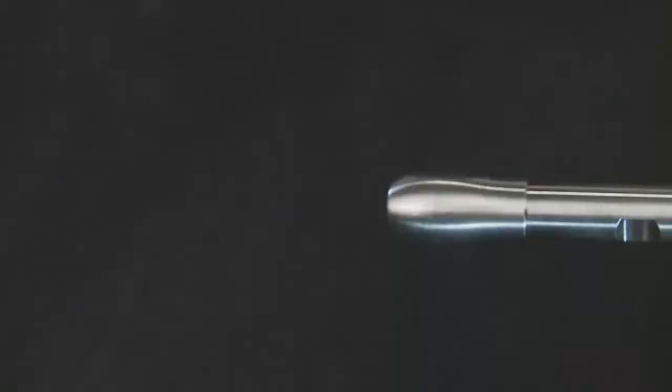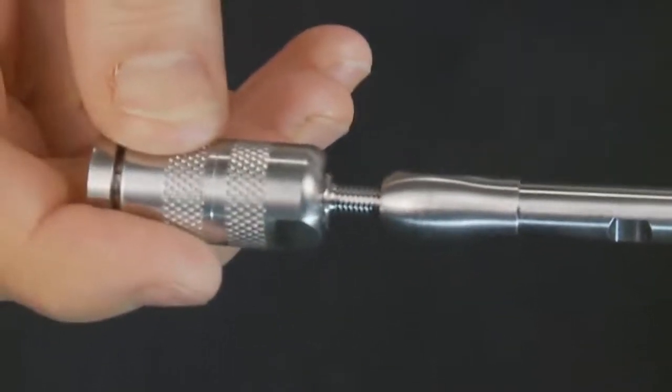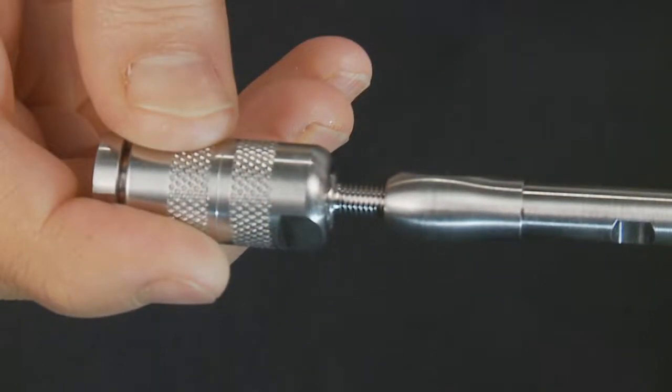Now that your Security Guard assembly is complete, let's attach it to the HPLC column. Firmly push the nib end of the cartridge holder straight onto the column end fitting.